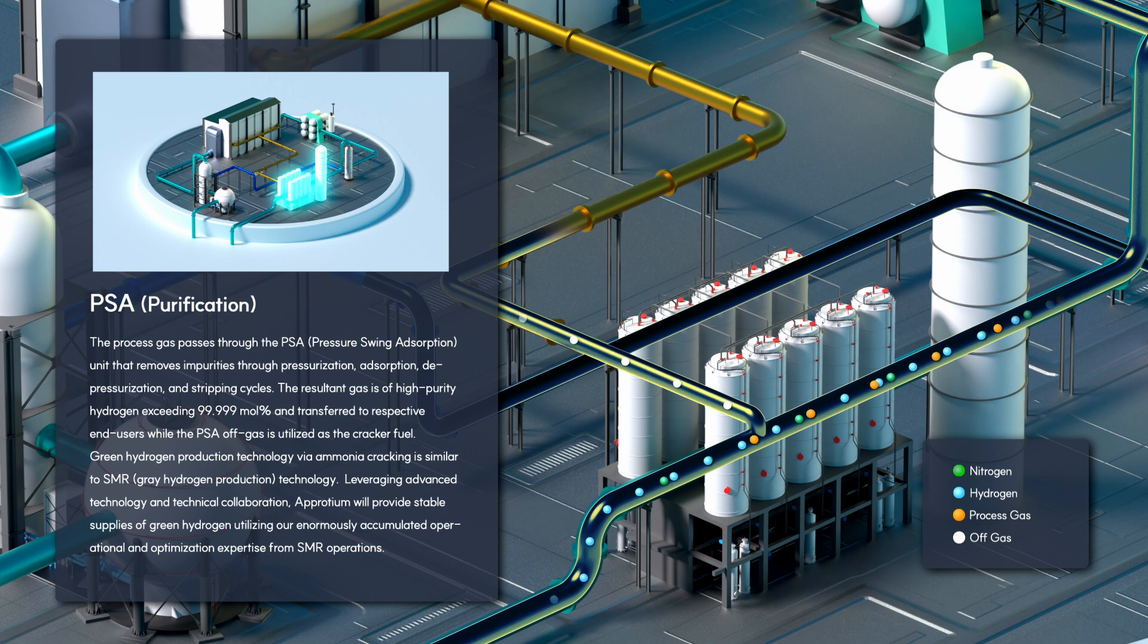Green hydrogen production technology via ammonia cracking is similar to SMR technology. Leveraging advanced technology and technical collaboration, Aprodium will provide stable supplies of green hydrogen, utilizing enormously accumulated operational and optimization expertise from SMR operations.